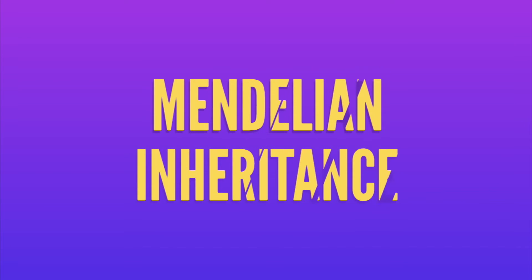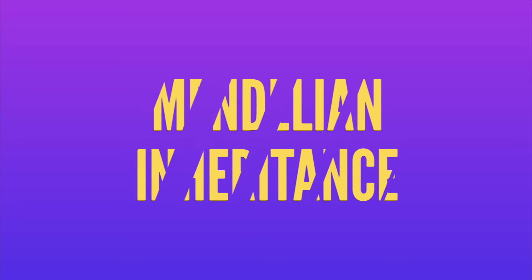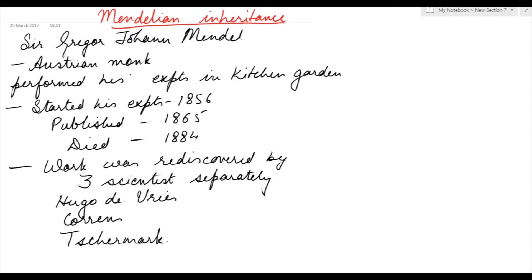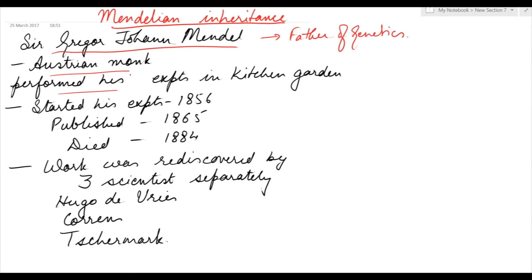Hello everyone, today's topic is Mendelian Inheritance. Sir Gregor Johann Mendel is the father of genetics. He was an Austrian monk who performed his experiments in the kitchen garden of the monastery in which he lived. He started his experiments in 1856, published them in 1865, and died in 1884.